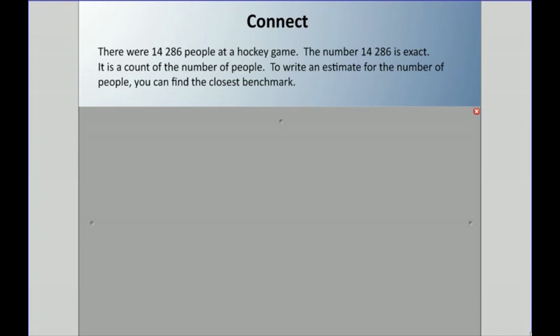We're going to look at estimating using something called benchmarks, and we're going to use a number line to do a lot of our work today. I'm going to have this problem about a hockey game come up now and again. Let's say there was 14,286 people at a hockey game. The number 14,286 is exact. It is a count of the number of people. To write an estimate for the number of people, we can find the closest benchmark.